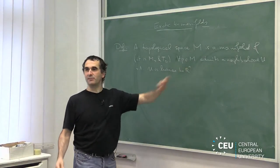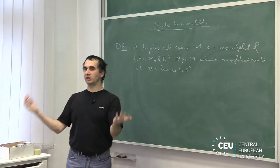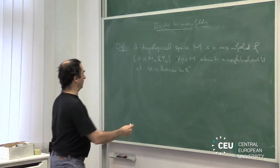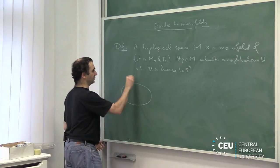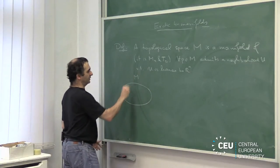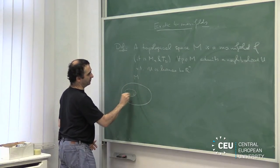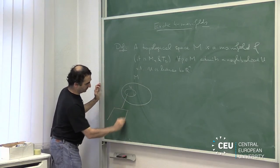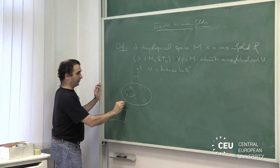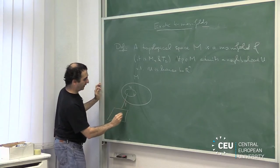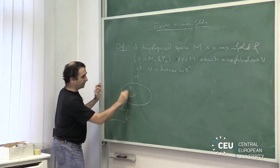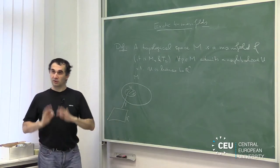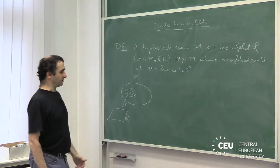It turns out that this dimension N is a locally constant function. To picture this concept: this is M, we pick a point P, there should be a neighborhood U, and there should be a homeomorphism phi between this subset and R^n. So locally it's fine.